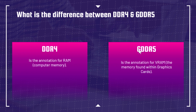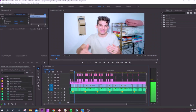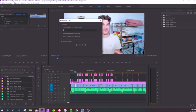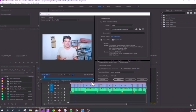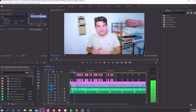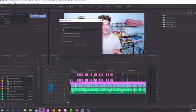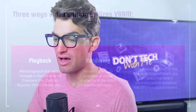Three ways that video editing utilizes VRAM: playback, rendering, and encoding. Playback is watching back edited footage in the timeline of Premiere Pro or DaVinci Resolve. Rendering is rendering motion graphics or visual elements in the video editing software. Encoding is the exporting — when exporting out of the video editing software, you can select hardware encoding, which allows the GPU to support the export.